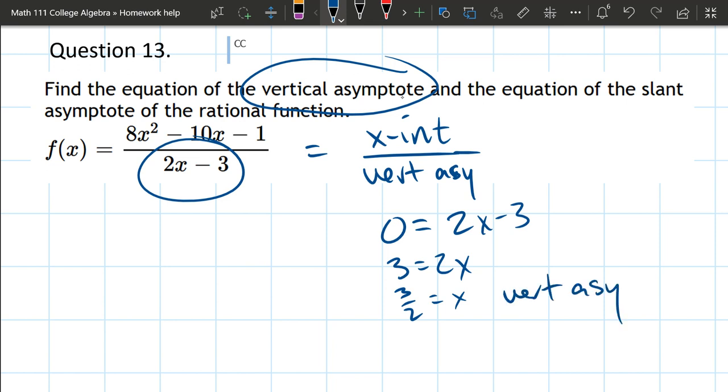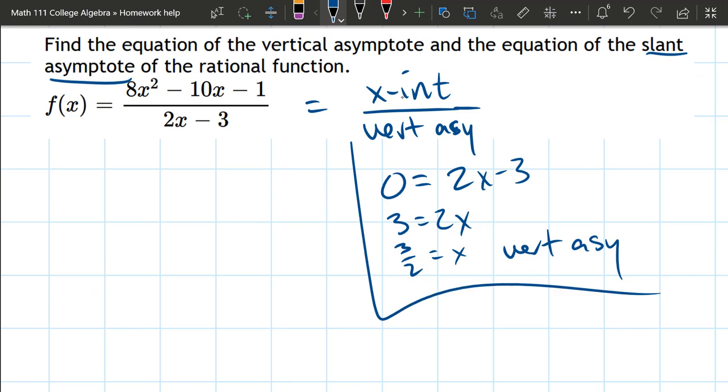All right, so now that's out of the way, let's look at slant asymptotes. So what in the world are slant asymptotes? They describe end behavior. So slant asymptote is end behavior. It's one type of end behavior.